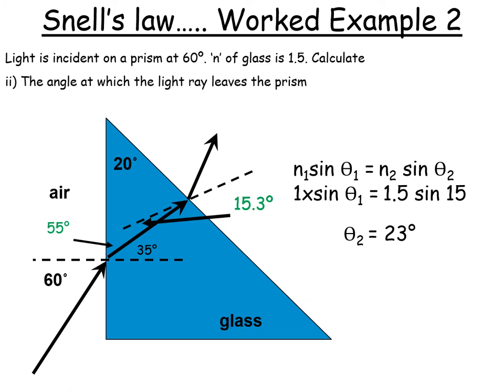So once we've done that, it's fairly straightforward. We plug in our quantities, just making sure we get the right theta 1s and theta 2, and we get the angle is 23 degrees. And as a check, remember, in the previous lesson, I said to you that going from glass into air, the angle of refraction will always be greater than the angle of incidence. We can see that's true.